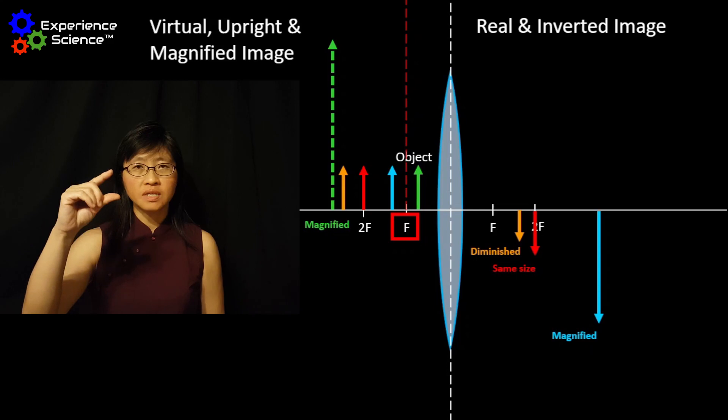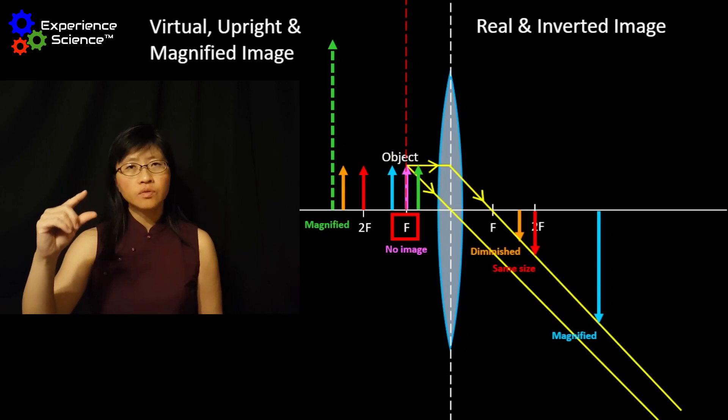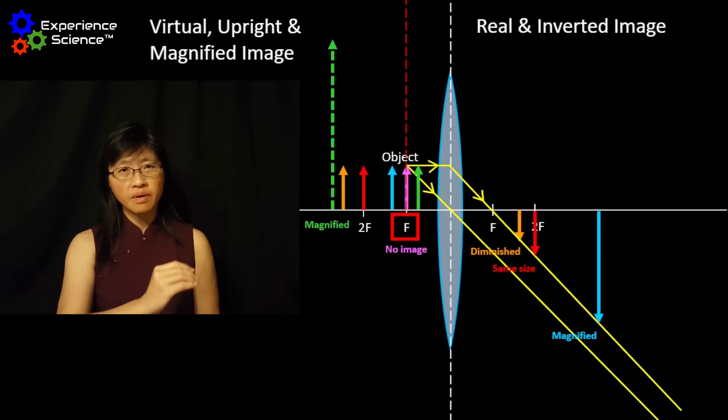When the object is placed exactly at F, no image will be formed because the light rays that pass through will be parallel.